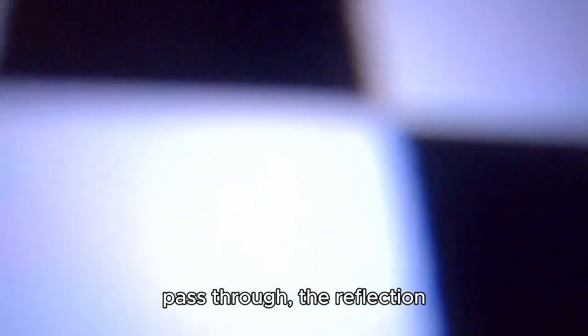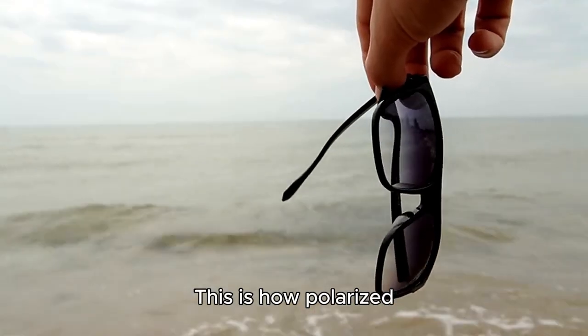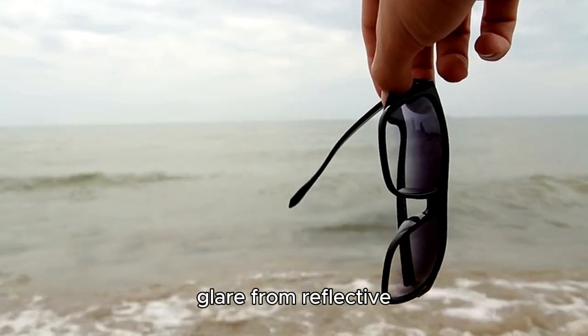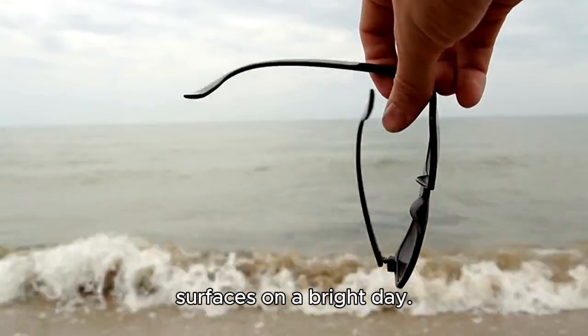If this light then encounters a filter that permits only vertically polarized light to pass through, the reflection will be blocked. This is how polarized sunglasses filter out the glare from reflective surfaces on a bright day.